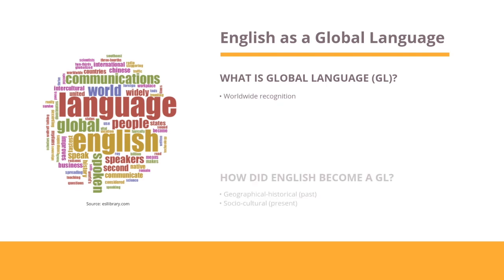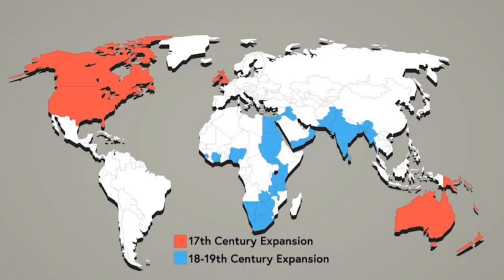So how did English become a global language? Well, at the height of the British Empire in the 1900s, Queen Victoria had amassed a total of 53 states, one third of the world population speaking English. So you can imagine the number of English variations, or Englishes.